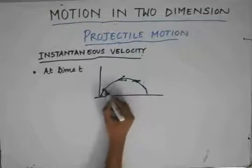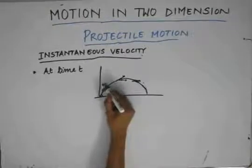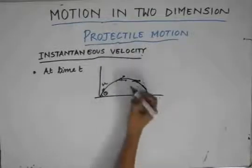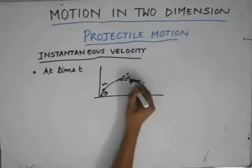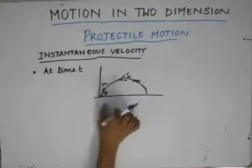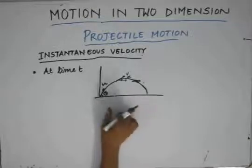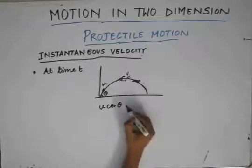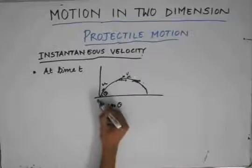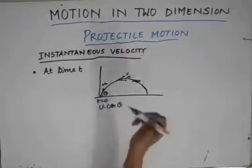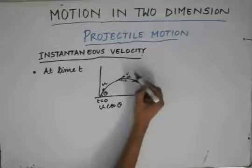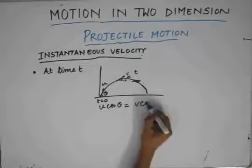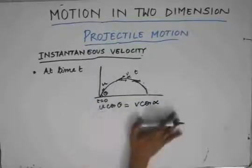Let the initial velocity be u which makes an angle θ with the horizontal. At any instant, let the velocity of the particle be v which makes an angle α with the horizontal. Since the horizontal velocity is constant at any instant of time, we can write that u cos θ is the horizontal velocity at t = 0, and v cos α is the horizontal velocity at time t. There is no acceleration in the horizontal direction.